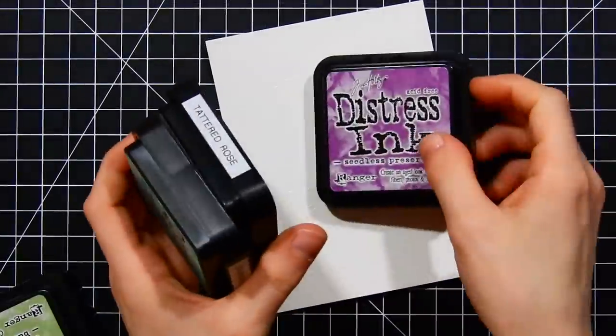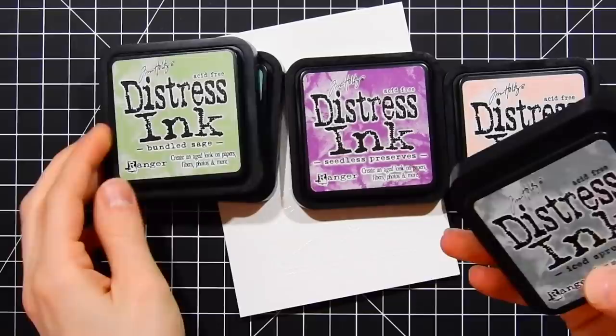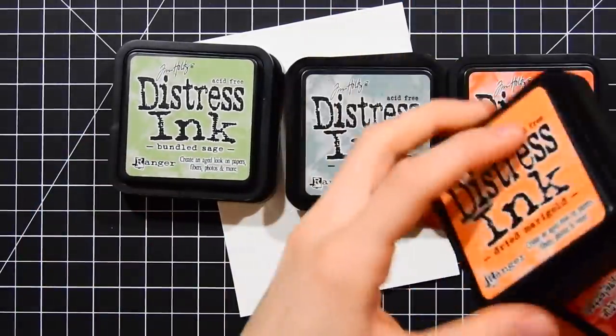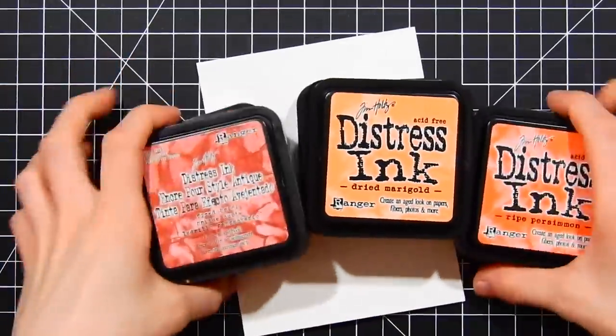For my watercoloring I'm going to use a variety of distress inks here. I've got evergreen bough, seedless preserves, tattered rose, bundled sage, ice spruce, ripe persimmon, dried marigold, and fired brick. I'm going to be using all these colors today to do my watercoloring.